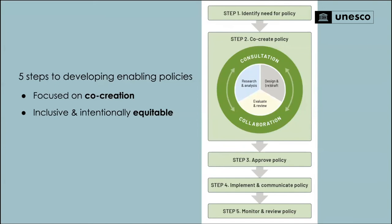Javier has already described how the definition of enabling policies consists of 15 criteria across three categories. This was drawn from consultation with many students and staff across higher education and a literature review of policy guidance. We thought it was important to disaggregate policy content, policymaking process, and policy form, so they can be used as checklists or guidelines at different stages of the policymaking process. The content should be integrated with institutional strategy, reflective of organizational culture, and aligned with other policies. The process should be collaborative, democratic, and at its heart should be student-staff partnership — diverse and intentionally equitable.